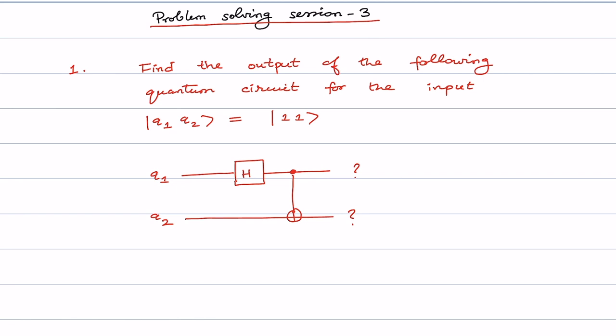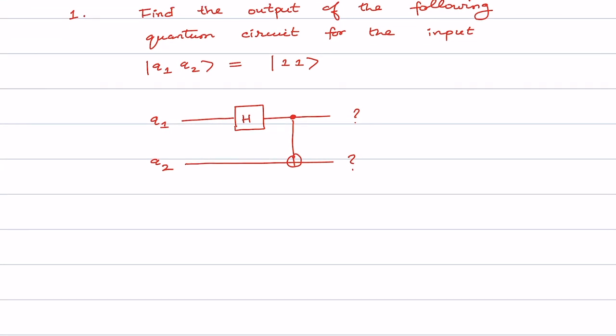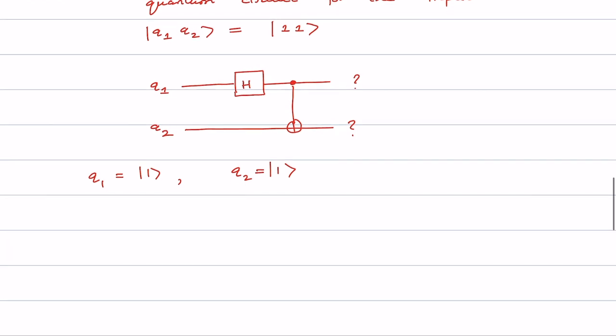In this problem-solving session number three, we are going to solve some problems related to quantum gates, quantum circuits, entanglement swapping, and measurement. As a first problem, we are asked to find out the output of this quantum circuit. In this circuit, a Hadamard gate followed by a CNOT gate is given, and the inputs are q1 = |1⟩ and q2 = |1⟩.